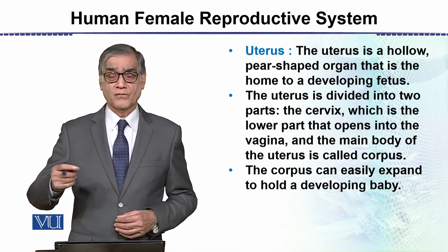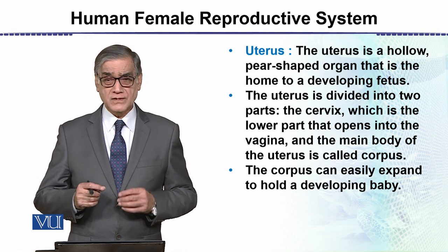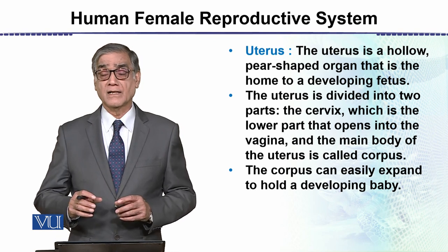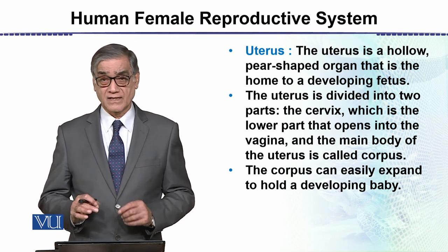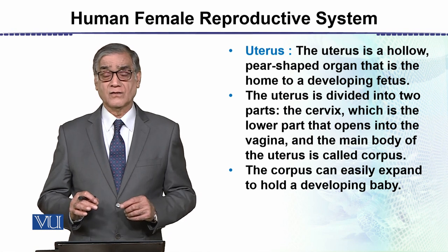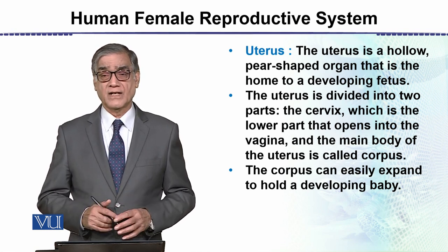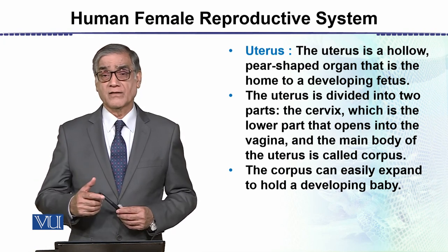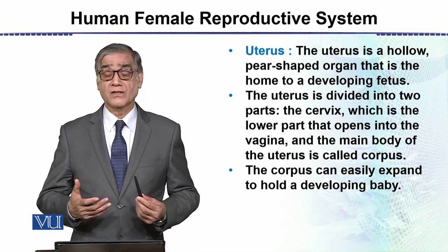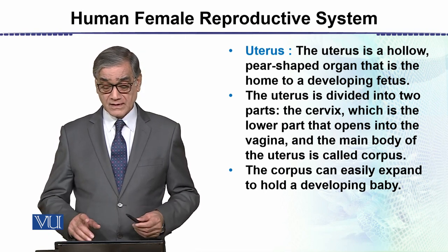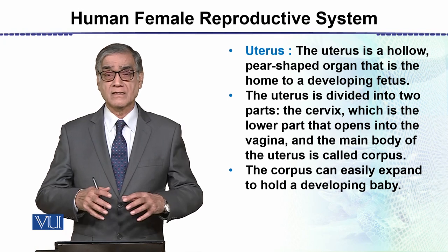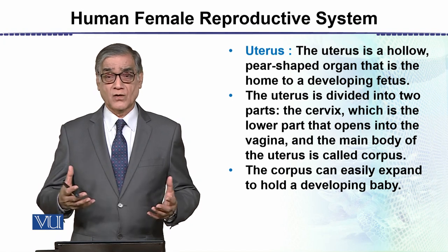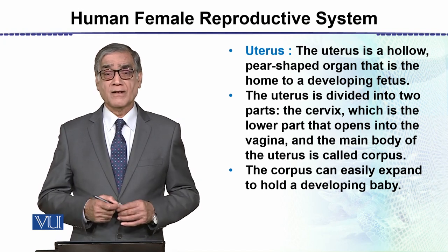The fertilized egg travels through the fallopian tube and arrives in the uterus. At that time, the uterus is in the right condition, and the fertilized egg — the zygote — readily implants itself in the uterine wall. That is the point which marks the start of pregnancy. The Corpus of the uterus can easily expand to accommodate the developing child.